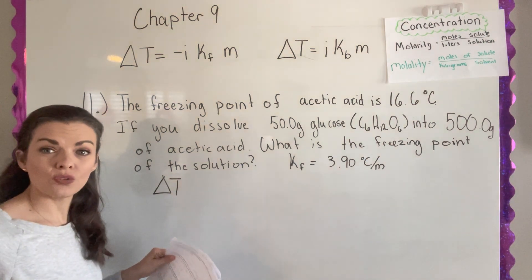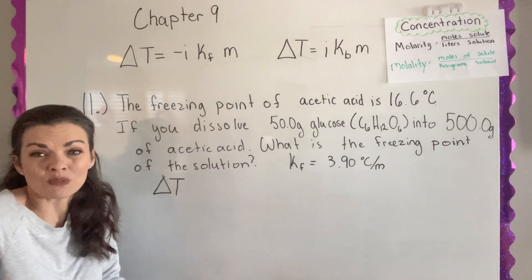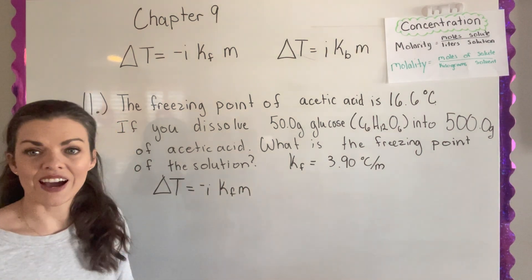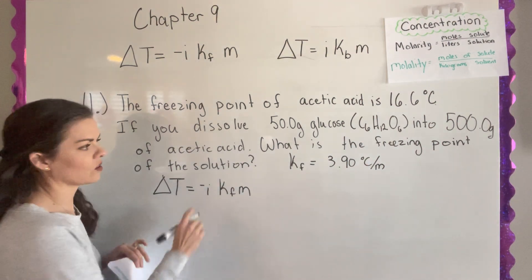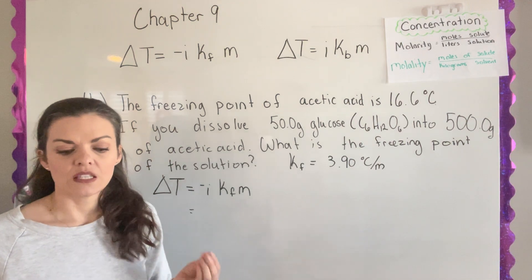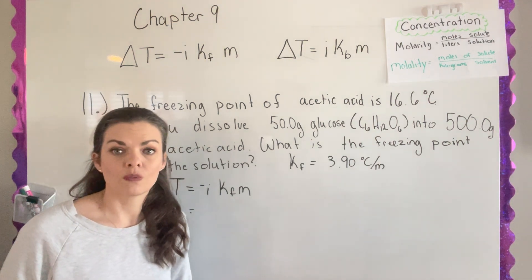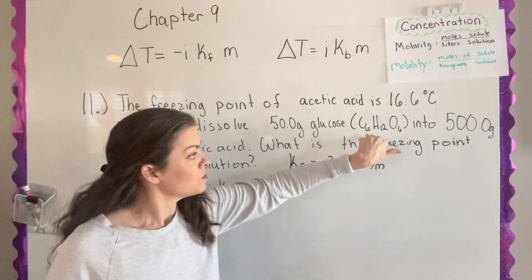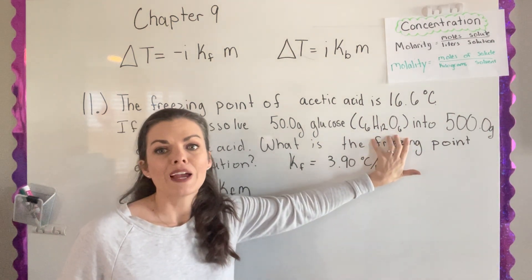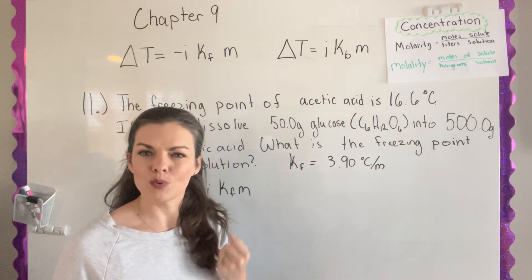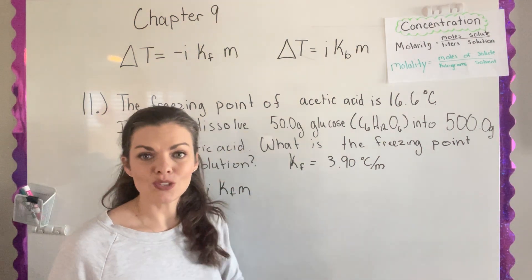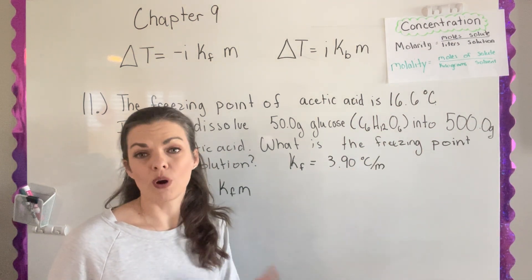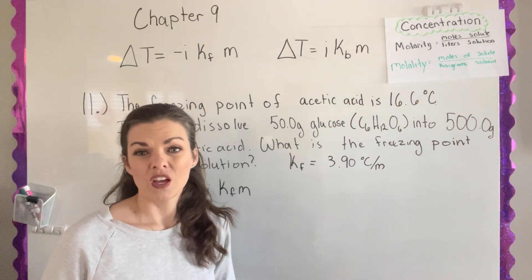I'm looking for the new freezing point, so I don't know the temperature difference — that's what I'm solving for. I have negative i, the constant K, and molality. I can calculate i: glucose is a covalent compound with no metals, just non-metals, similar to a carbohydrate. It has physical bonds, so when dissolved in acetic acid it doesn't break apart. We end up with only one particle floating in the solution, so i equals one — making it negative one.